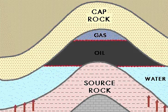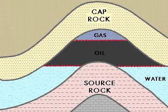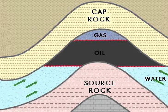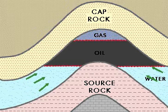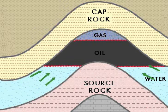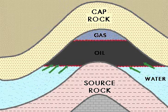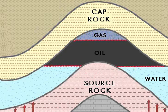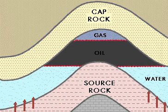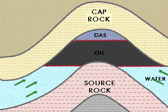Oil and gas originate from organic matter in sedimentary rocks. This organic debris accumulates at the sea bottom during the process of sedimentation. Bacteria and pressure work on this organic matter and break them down into substances rich in hydrogen and carbon.